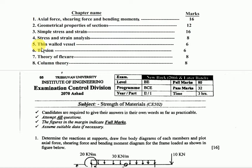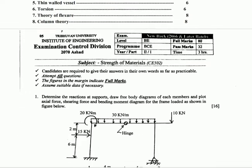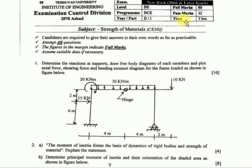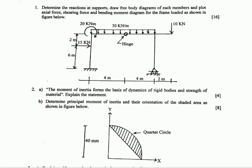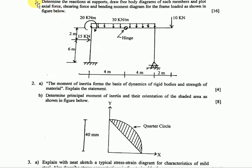Chapter 7 and Chapter 8 cover column theory. Question number one is about a frame — find the support reactions, draw the free body diagram, and find the axial force, shearing force, and bending moment diagram. This is from Chapter 1.